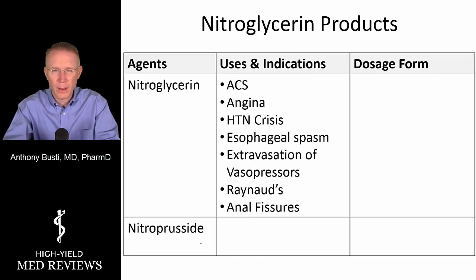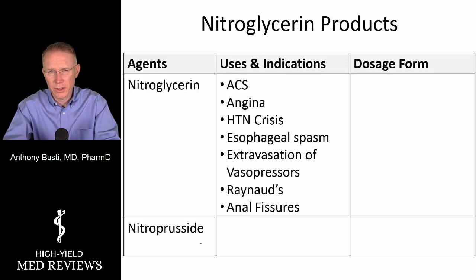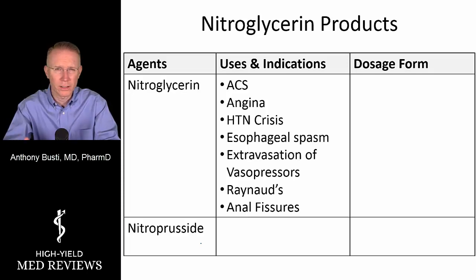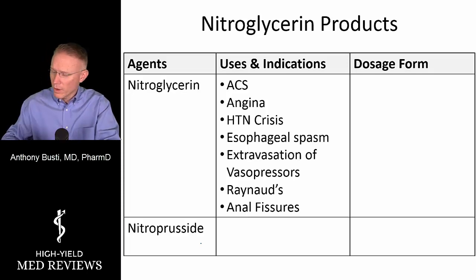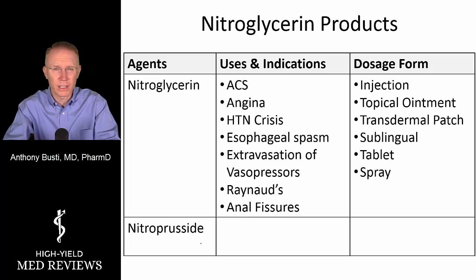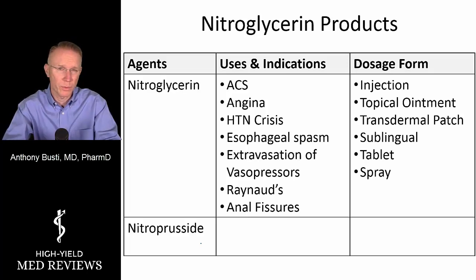We also use nitroglycerin for hypertensive emergency, urgency, or what we call crisis; esophageal spasms; patients who have extravasation of various pressors in tissue from an infiltrated IV; Raynaud's syndrome; and anal fissures. Part of the reason there are so many indications is the wide variety of available dosage forms.